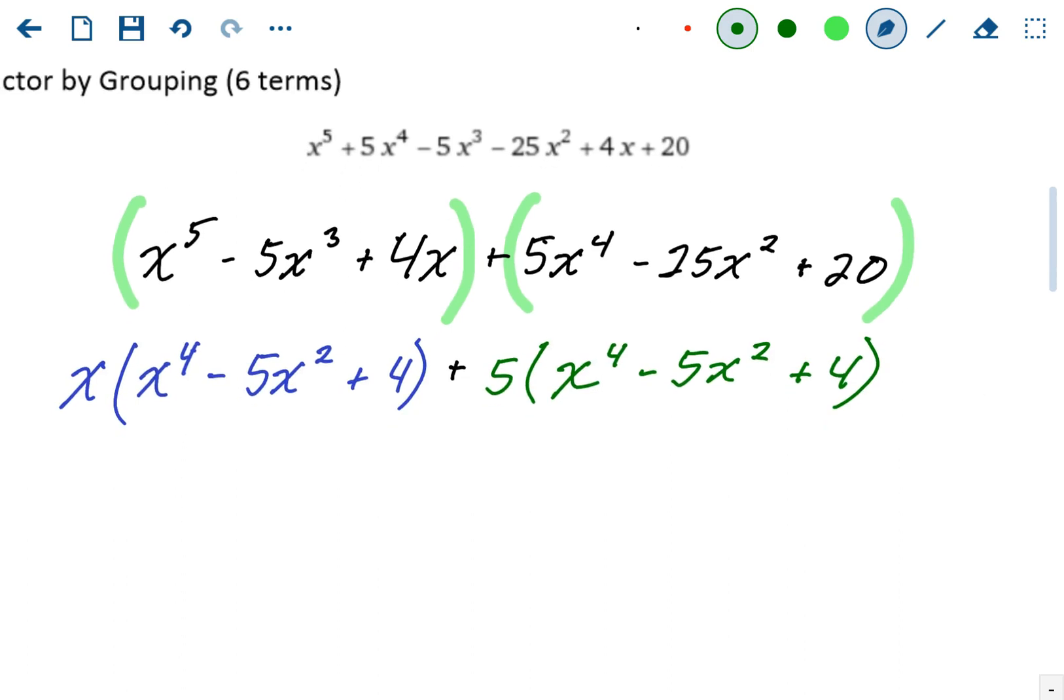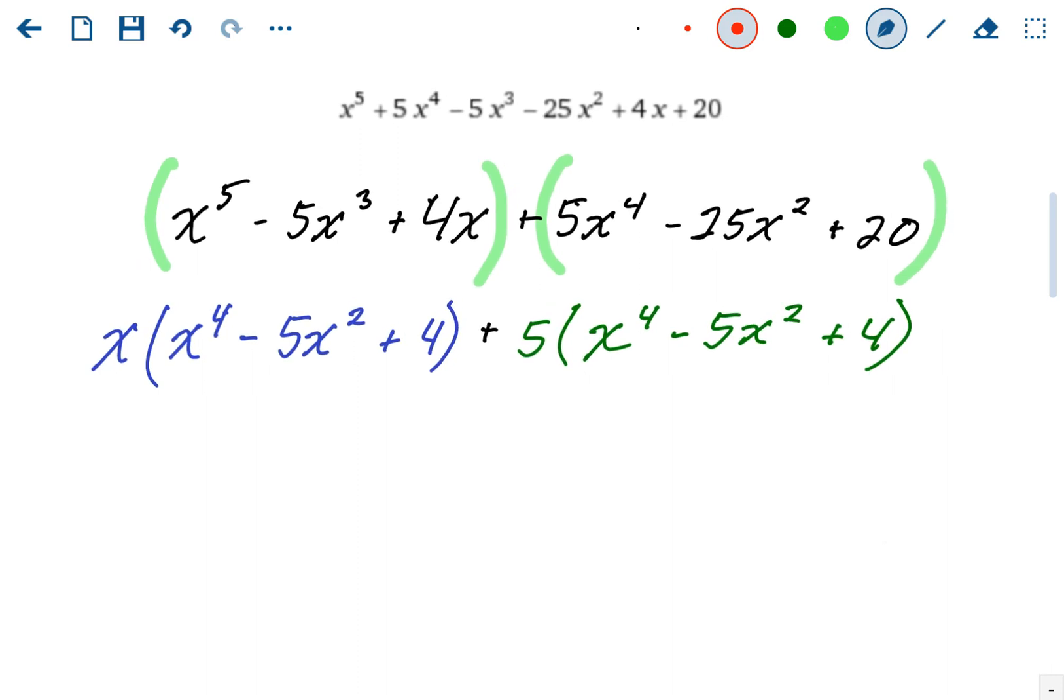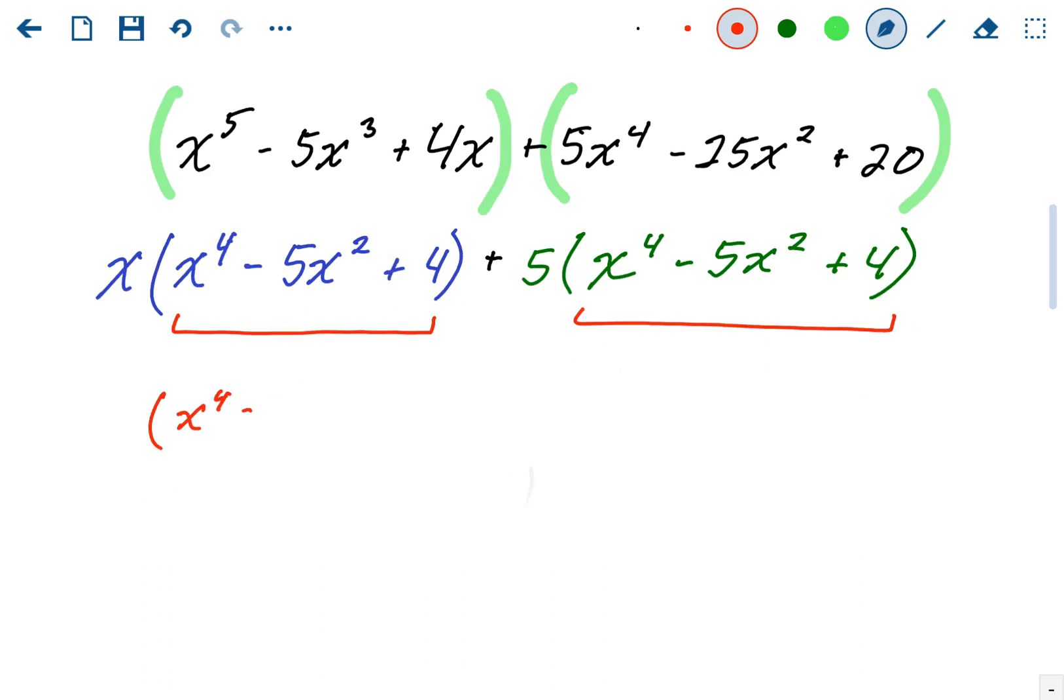If you notice, and remember this should always happen in a factor by grouping problem. After you take out the GCF, the leftovers are the same. So we can factor that out. So we're going to factor out the whole polynomial, x to the fourth minus 5x squared plus 4.